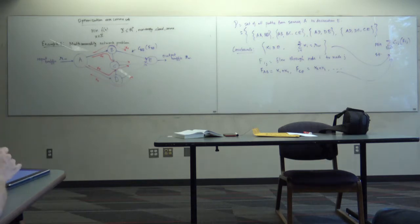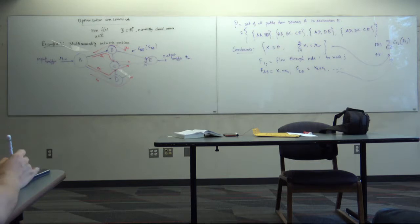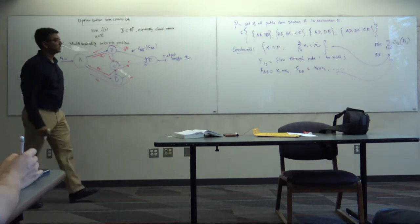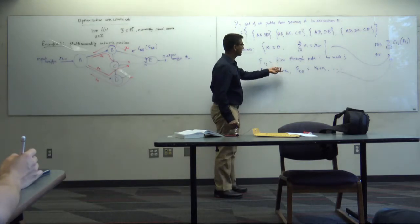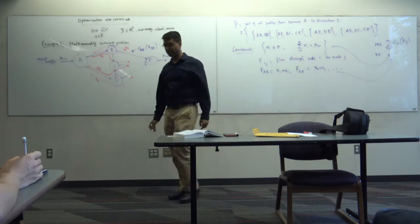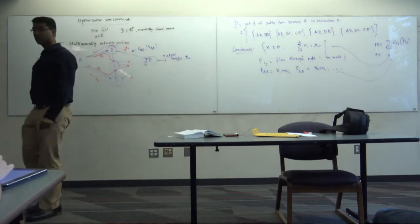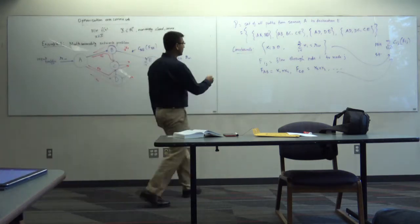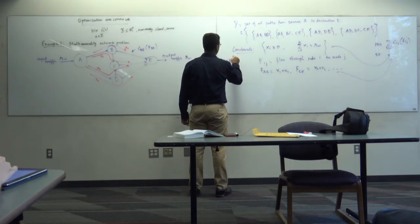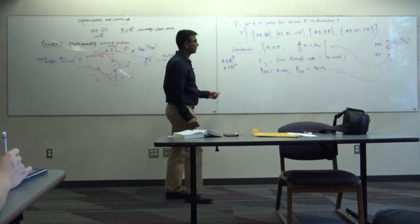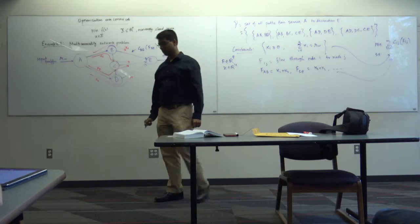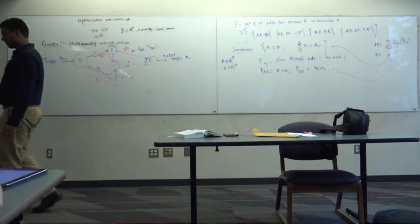This is a convex optimization problem — a minimization over a convex set — because the set of all x and f satisfying the constraints forms a convex set. F is in R^7 and x is in R^4, so this is an 11-dimensional problem.